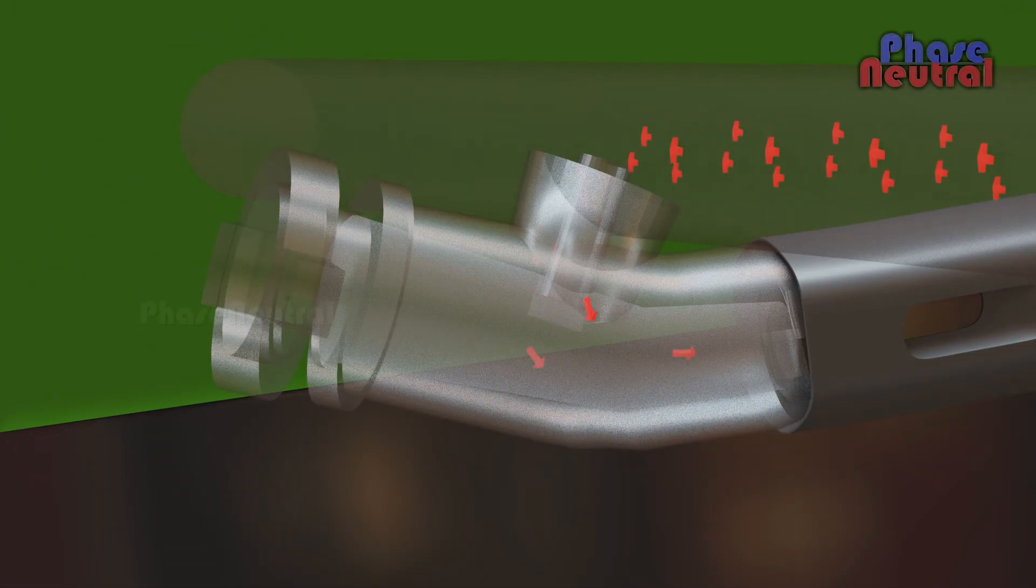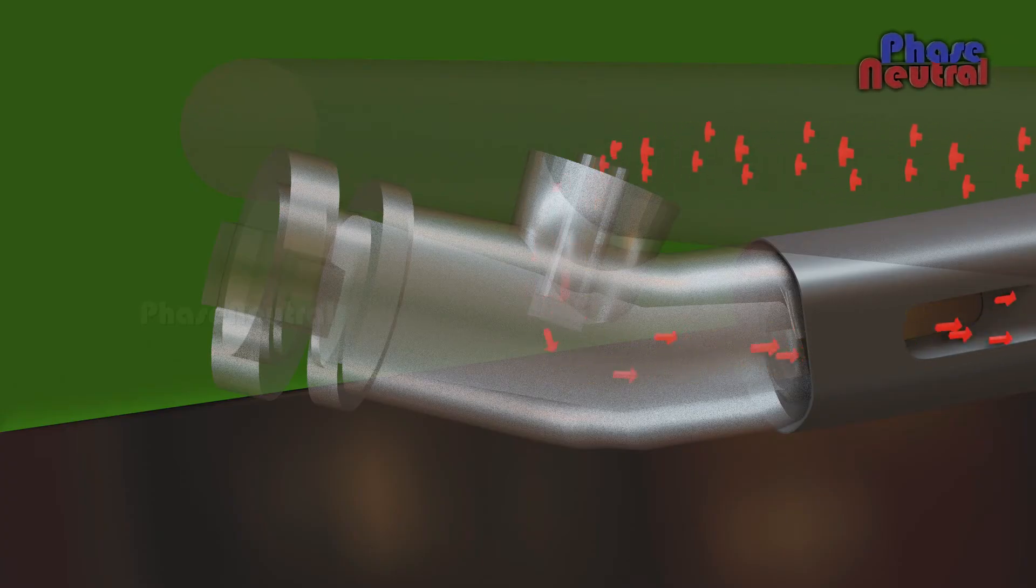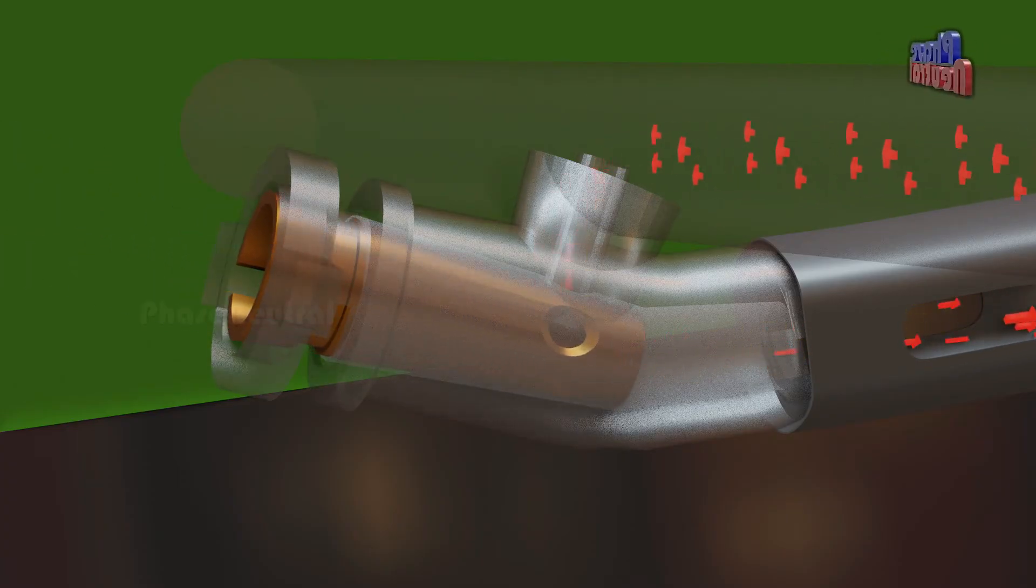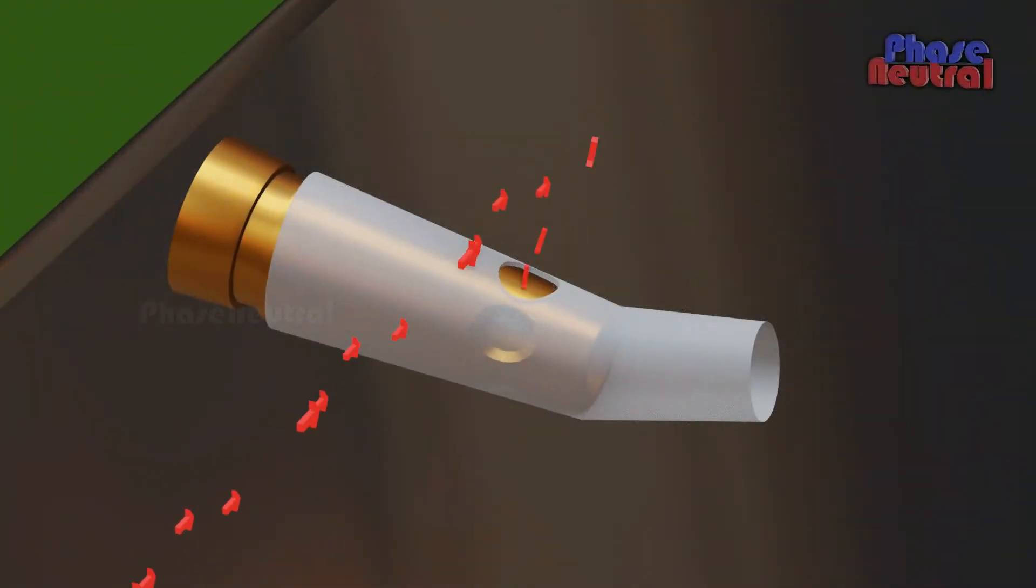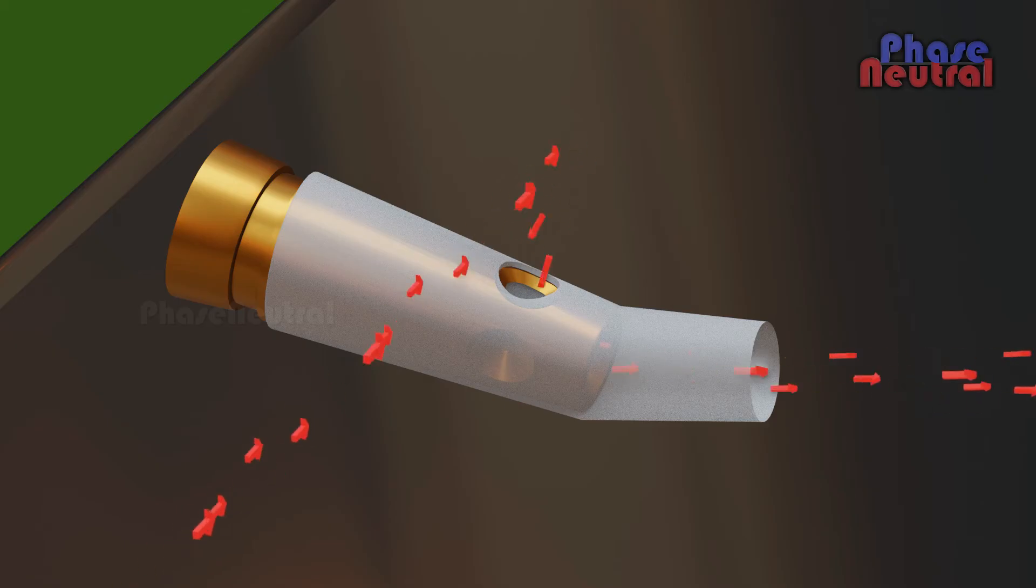If there was no valve, gas would flow to the burner without any control. The valve blocks this gas flow when the knob is in the off position. When we rotate the knob to the left, the valve's big hole reaches the upper hole. So gas starts to flow to the burner and makes high flame.